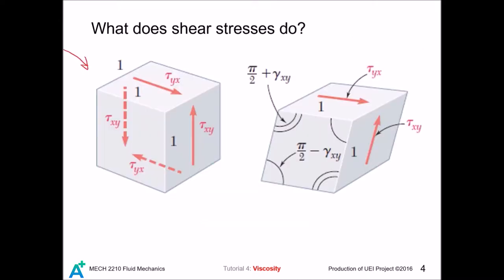This is a cubic element under pure shear. To achieve static equilibrium, we need total of four forces. Imagine that we take away these two forces. Then this pair of forces will generate a clockwise moment. So we need all four of them. After applying the four forces, we find that the cubic element is no longer cubic. And there is some angular deformations here. This angle is called shear strain.